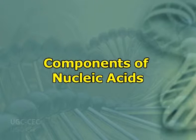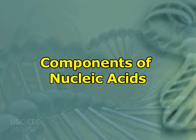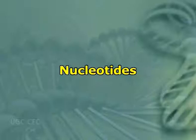Now, let me discuss the components of nucleic acid — the main components of nucleic acids. Nucleic acids are made by joining nucleotides in a repetitive way into long chain-like polymers. Nucleotides are made of three main components: first, phosphate; second, sugar; and third, nitrogenous base.